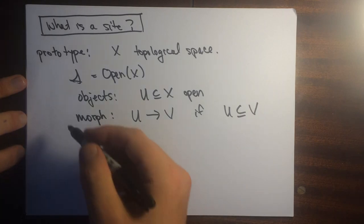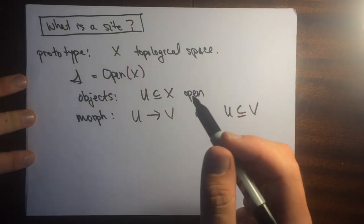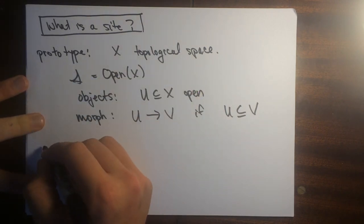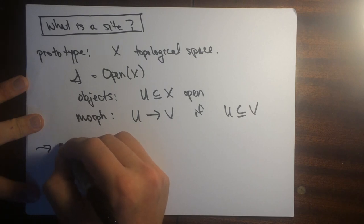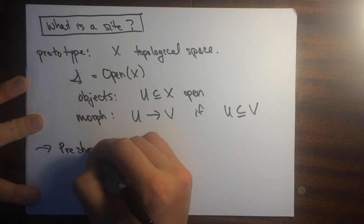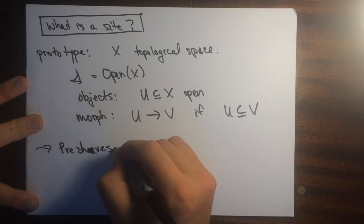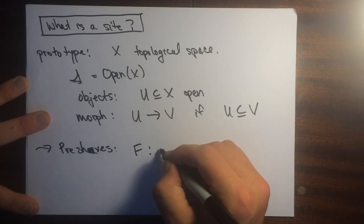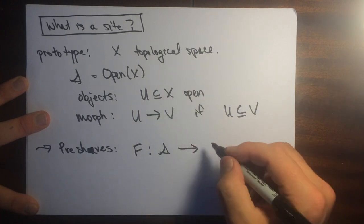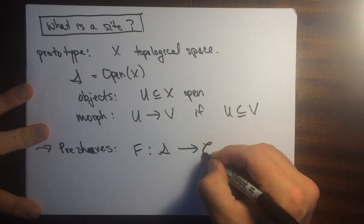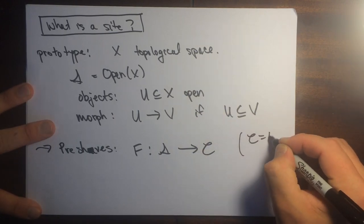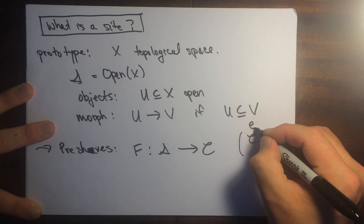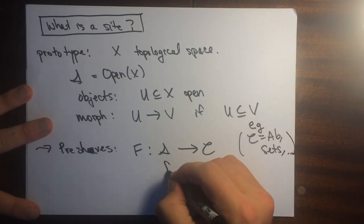So now we have this thing, this category of open sets. We can define a notion of pre-sheaves. They're just going to be functors from this category to another category. So we fix here another category. This could be like abelian groups or sets. These are examples. So these are just functors.